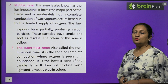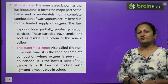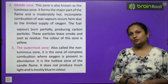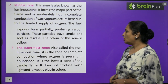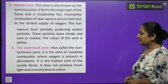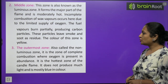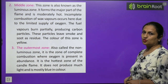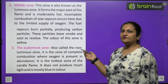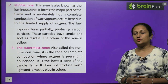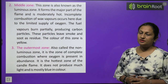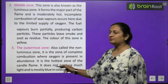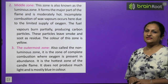The outermost zone has a sufficient supply of oxygen, so complete combustion of fuel occurs here. It is the hottest part of the flame and emits blue light. It is also called the non-luminous zone. To summarize: innermost = dark zone (no combustion), middle = luminous zone (incomplete combustion, yellow), outermost = non-luminous zone (complete combustion, blue, hottest).